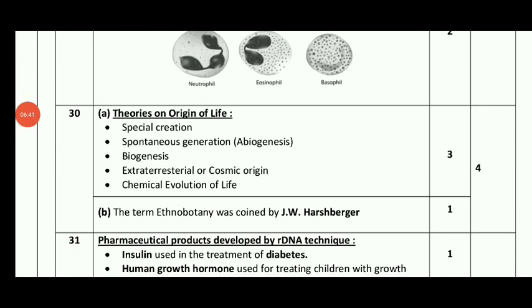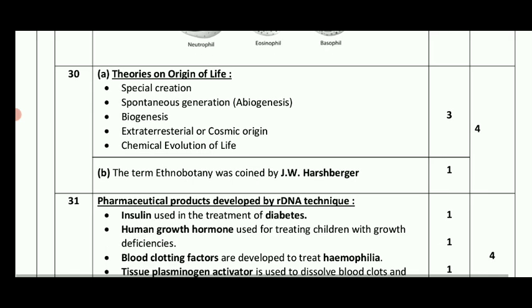The next one is the theories of origin of life — this is the 3 mark main point. The theories include: spontaneous generation, biogenesis, chemical evolution of life, and special creation.